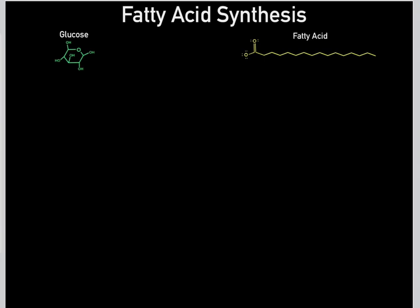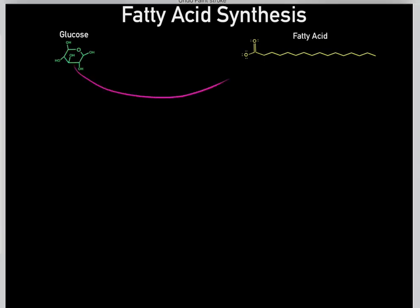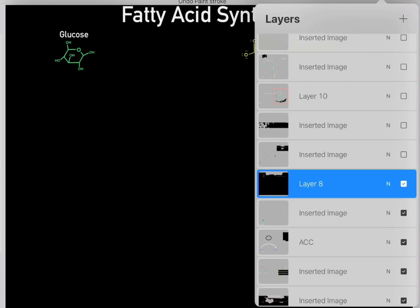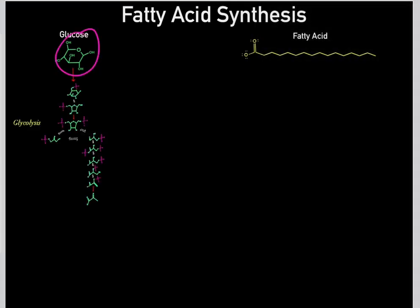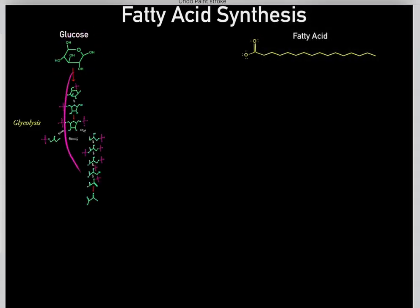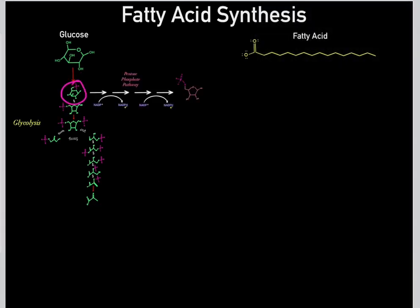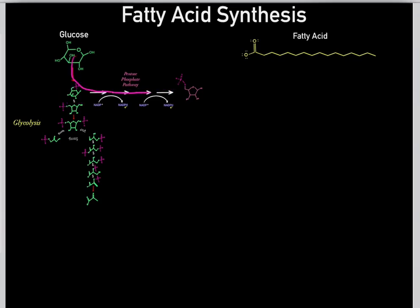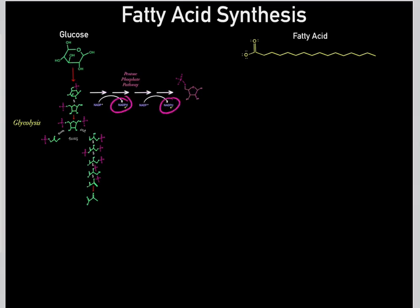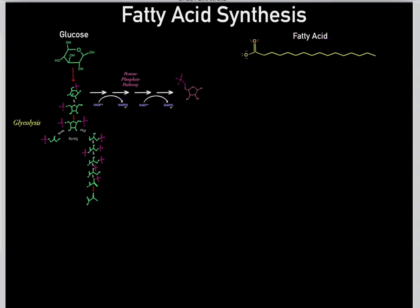So how exactly do we take the carbons in glucose to biosynthesize free fatty acids? If you eat excess glucose it enters glycolysis, and as glucose molecules go through glycolysis we produce many intermediates. A particular intermediate of glycolysis then enters the pentose phosphate pathway, and as we go through the pentose phosphate pathway we produce NADPH reduced cofactors, which are the source of electrons used to biosynthesize free fatty acids.